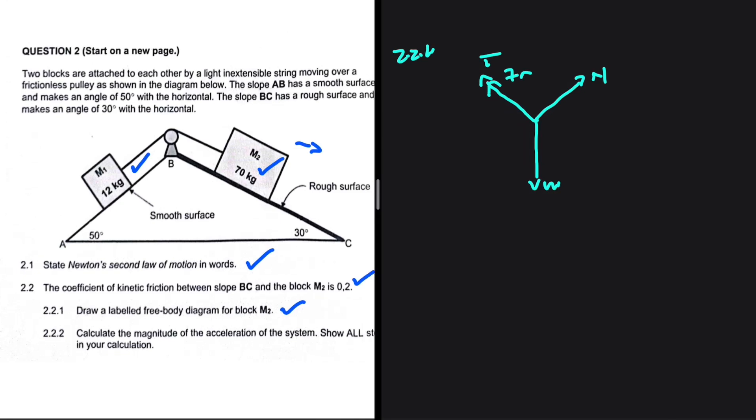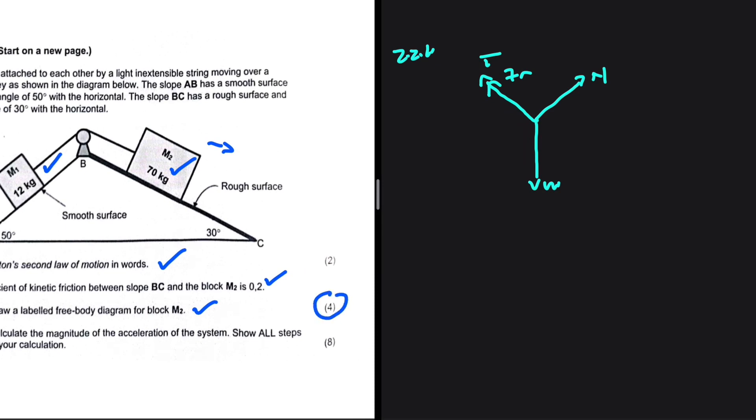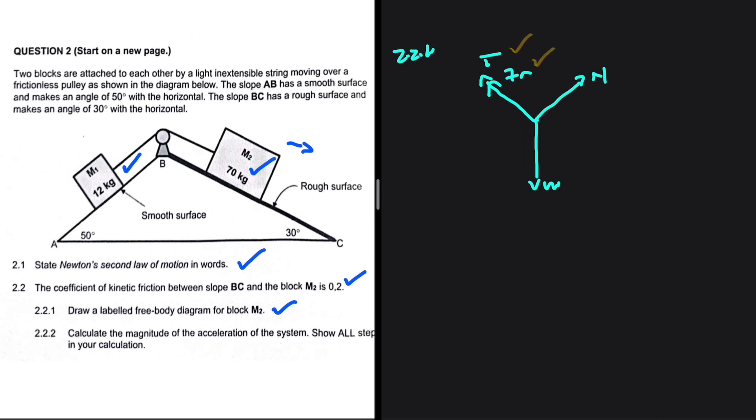2.2.1, it is for 4 marks and we have 4 forces on our free body diagram. So we are quite confident that we have not missed anything. Let's go ahead and do 2.2.2.